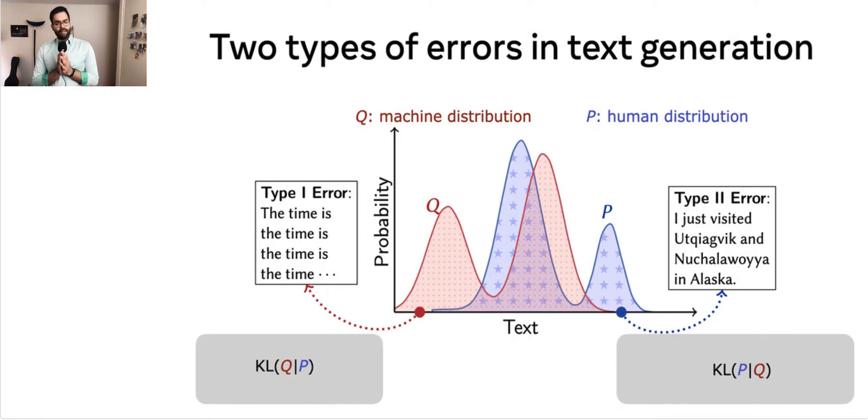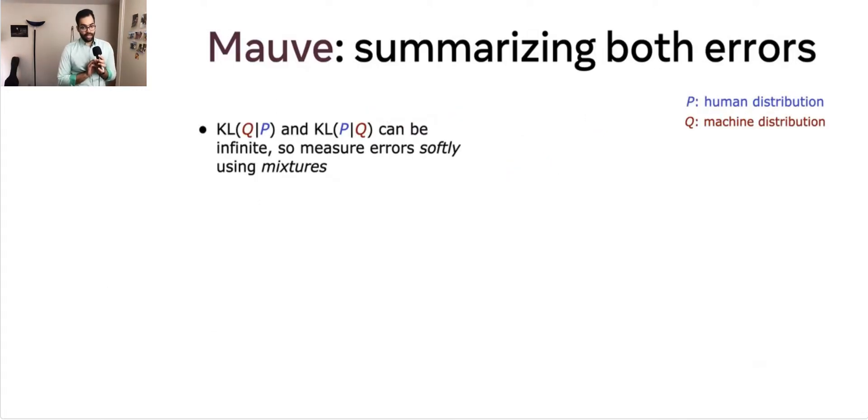Now, we note that the KL divergence and the reverse KL divergence are a natural way of quantifying these two errors. For instance, the KL divergence is large when there is a region where Q is large but P is small. Therefore, this quantifies a type 1 error. Likewise, KL(P||Q) quantifies the type 2 error. While this is well and good, it's also problematic because the KL divergence can be infinite. In particular, when the support of P and Q are not identical, one or more of these two KL divergences could be infinite.